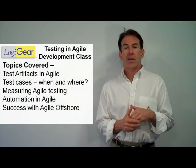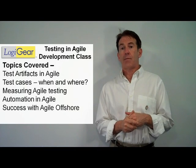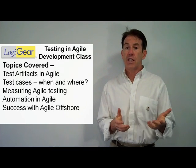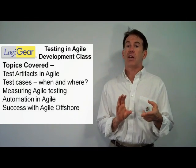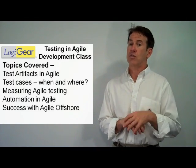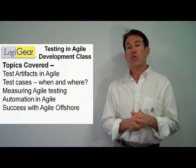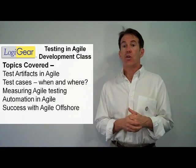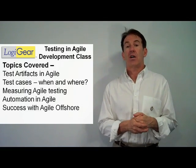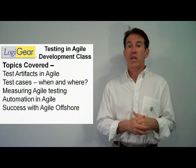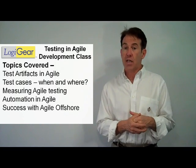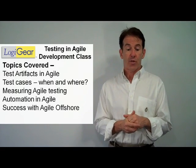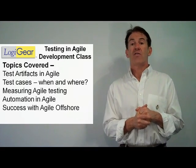Next we talk about test artifacts in Agile — by artifacts I mean the deliverables out of testing. Traditionally, software testers write test plans, test cases, and develop test data. In many Agile organizations, test teams completely stop writing test plans. So how do we communicate risk? How do we communicate our coverage and what we're doing in projects if we don't write test plans anymore? We can, but we have to know how to do it. So there's a whole section on the artifacts we create.